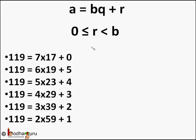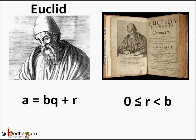This seems like an obvious fact now, but it was first documented by Euclid in his book Euclid's Elements. Euclid said: given positive integers a and b, there exist unique integers q and r satisfying a equals bq plus r,